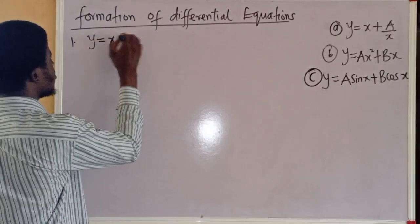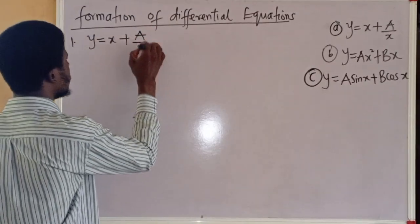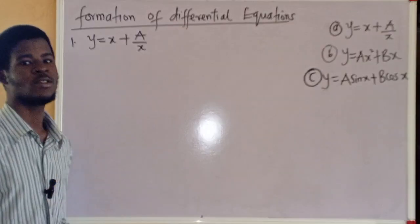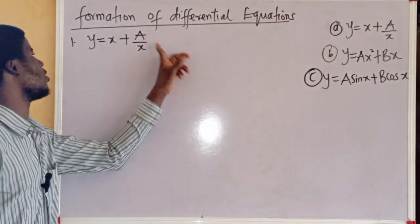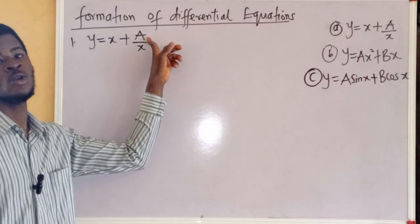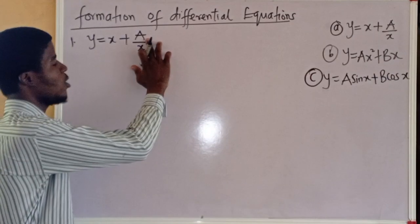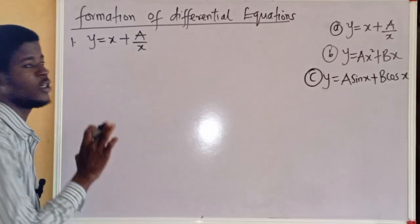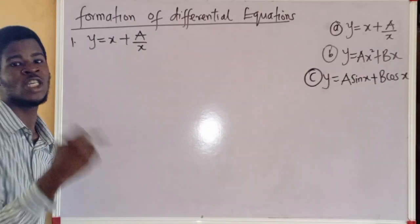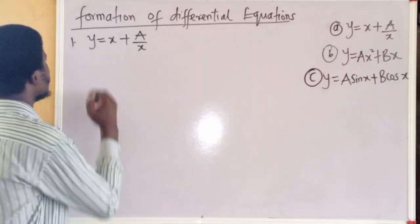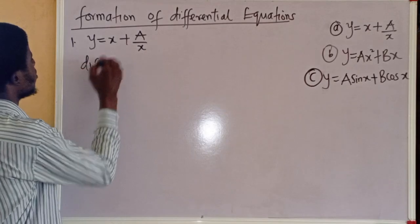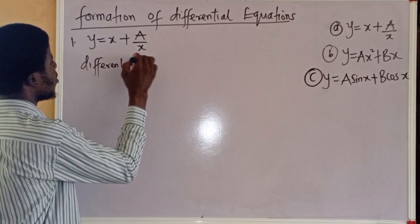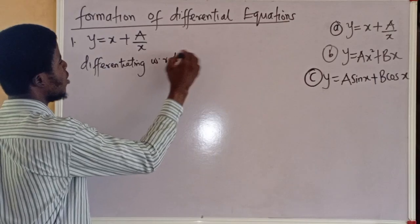y equal to x plus a, all over x. Now, if I look at this equation, I can see that there is one unknown. A is a constant and it is unknown. Since we have just one unknown in this equation, I will differentiate this entire equation with respect to x once.